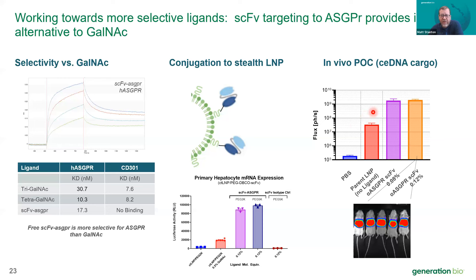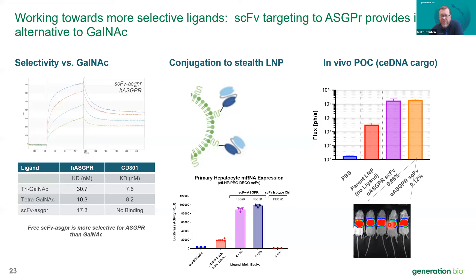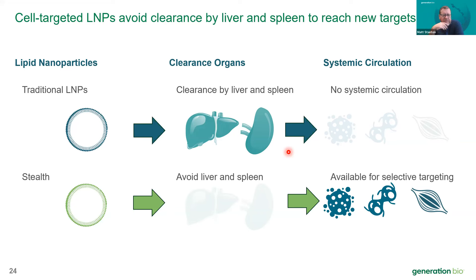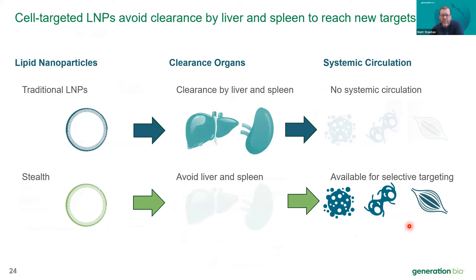We moved these scFv-targeted LNPs in vivo with Sedna DNA cargo. The parent LNP showed low expression around 10^7 total flux, and adding the scFv gave about a two-log increase in expression. Trastuzumab anti-HER2 scFv controls looked like parent LNPs — everything well controlled. The scFv for ASGPR showed very high levels of uptake and expression with mRNA cargo in primary hepatocytes relative to isotype control, and actually a boost versus the GalNAc cluster.